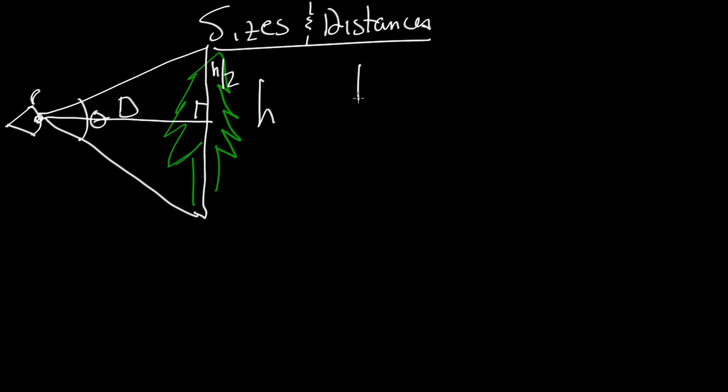And we know that the tangent of the angle theta is equal to the opposite over the adjacent, or in this case that would be h over 2 divided by the distance. Noting that in this case I've had to make theta over 2 be the main angle. So the tangent of theta over 2 is equal to h over 2 divided by the distance. Now that's very messy.